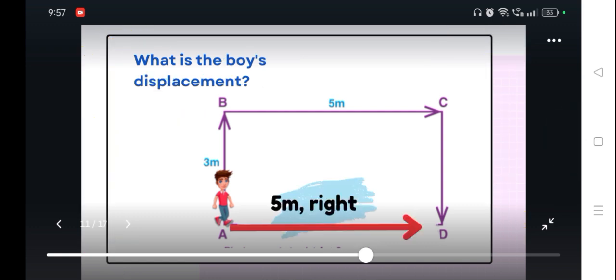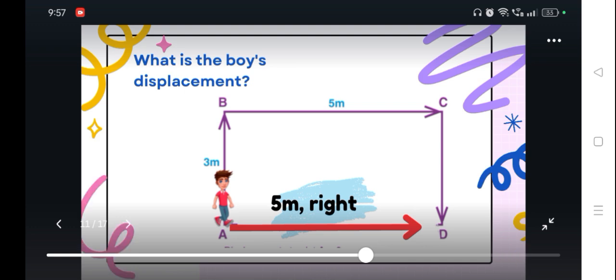And what is the displacement of the boy? So here we have a totally different answer from the first question. Since the final position of the boy is point D and the starting position is point A, what is the displacement of the boy from the starting point? We are going to measure from the starting point, moving to the right. Since that particular distance is a mirror of point B to C, we assume that is equal to 5 meters, and the direction is to the right. So the boy is 5 meters to the right from the starting point.